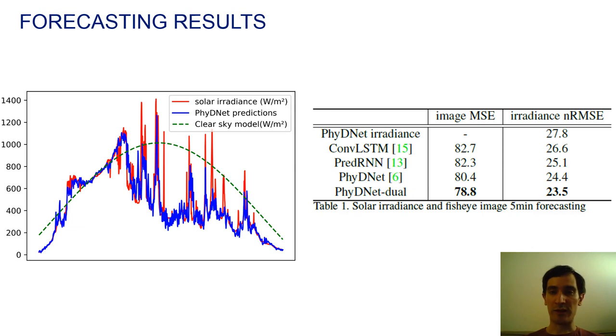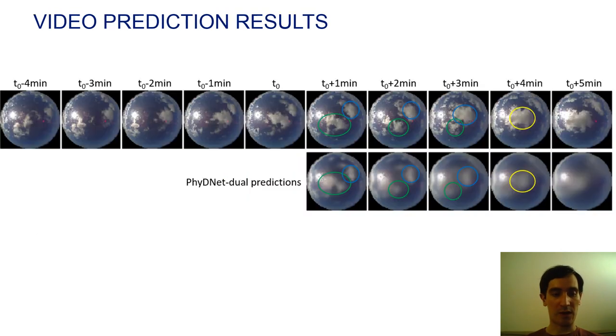We see that our PhyDNet-DRAWL model has the best performance with respect to all baselines, both in terms of image prediction and irradiance prediction. We also see here some qualitative video prediction results.